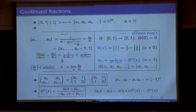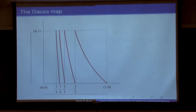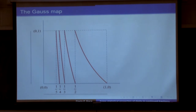Another important fact is that after iterating the Gauss map n times, we end up with the nice formula: g^n(x) = (q_n·x − p_n) / (p_{n−1} − q_{n−1}·x). In particular, if we multiply these together, we get a telescopic product, giving us a useful formula.